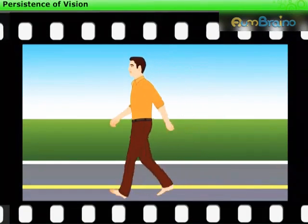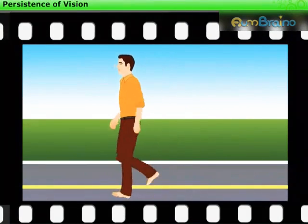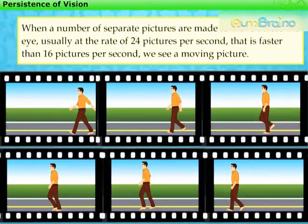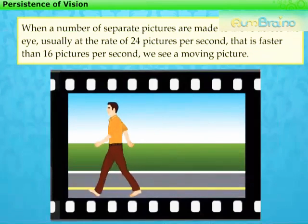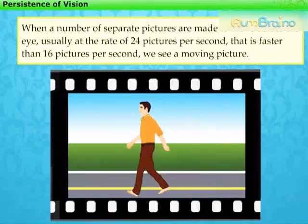The movies that we see are based on this principle. They are actually a number of separate pictures in proper sequence. And when they are made to move across the eye, usually at the rate of 24 pictures per second — that is faster than 16 pictures per second — we see a moving picture.